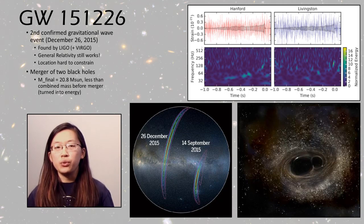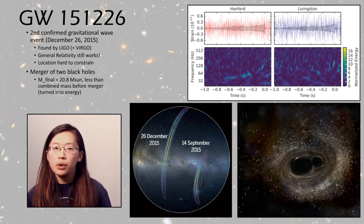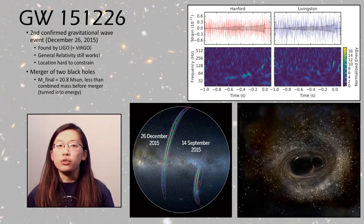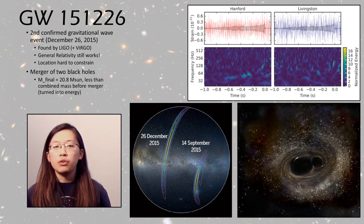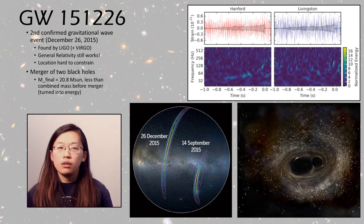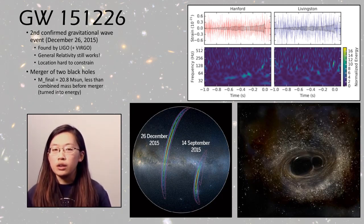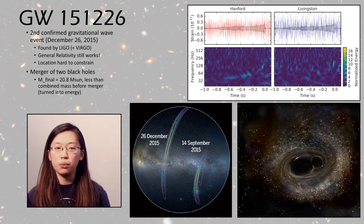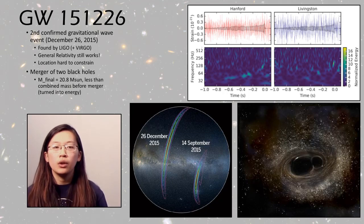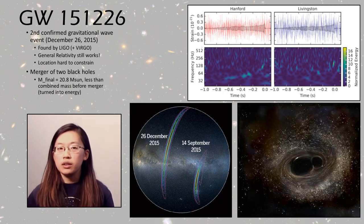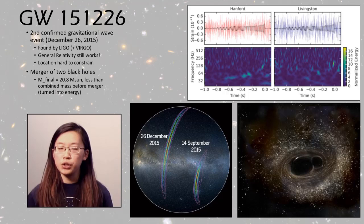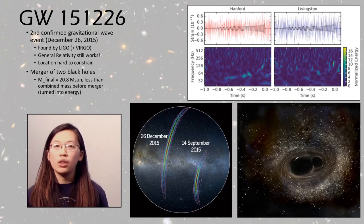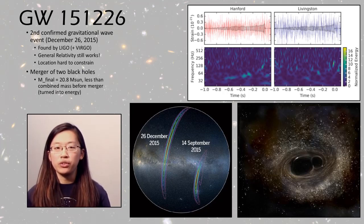Lastly, we have a couple of DSOs that are related to gravitational waves. So GW151226 was the second confirmed gravitational wave event found in December of 2015. So this was discovered by LIGO and also Virgo. So what we were able to tell from this event is that general relativity does indeed still work, because it confirmed a lot of what we expected based on general relativity.